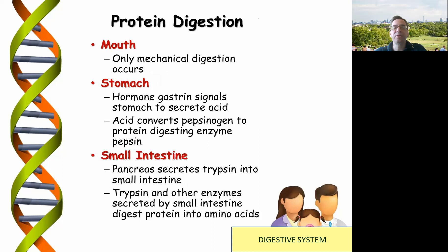Mechanical digestion occurs in the mouth, whereas in the stomach, gastric hormone signals cause secretion of acid and an enzyme called pepsinogen, which is broadly speaking a digestive enzyme. In the intestine, trypsin — another type of enzyme — digests proteins into amino acids.